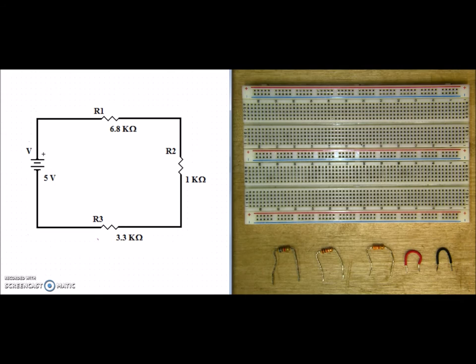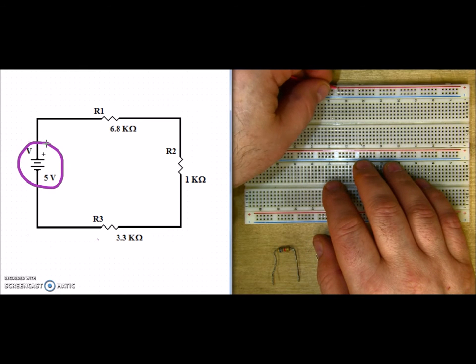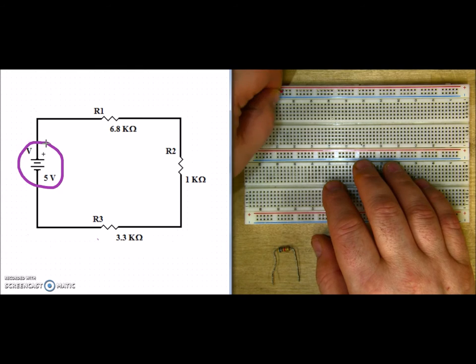When we look at these schematic diagrams, I always tell everyone to build the circuit like you see it. So we're going to start off with our source voltage right here. I'm going to take my red jumper from my source and put it into my red power bar.